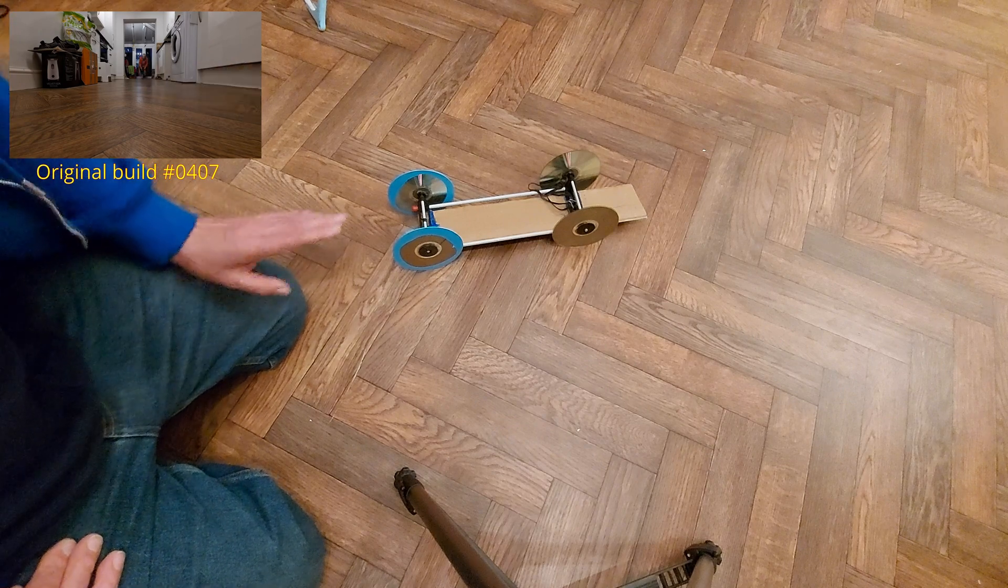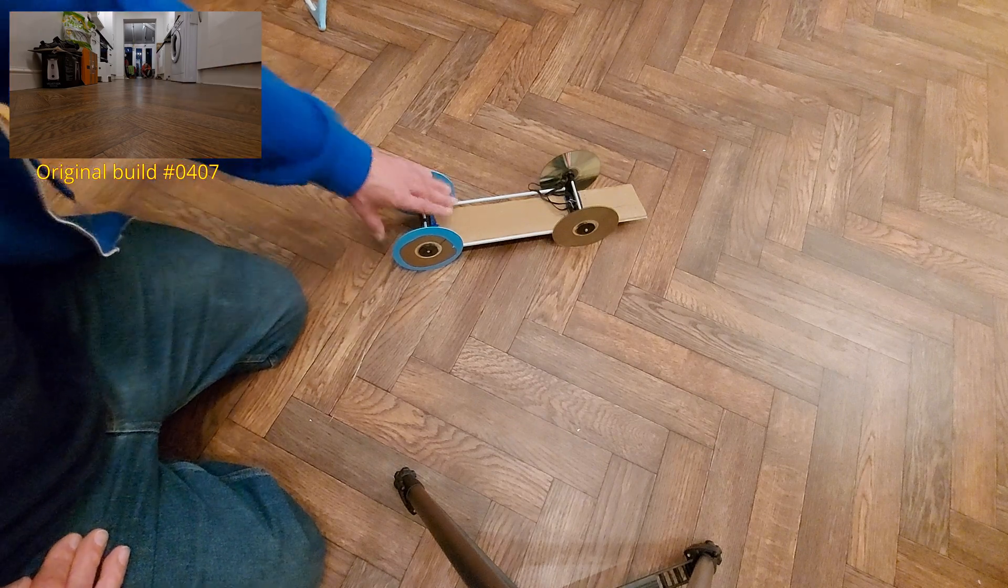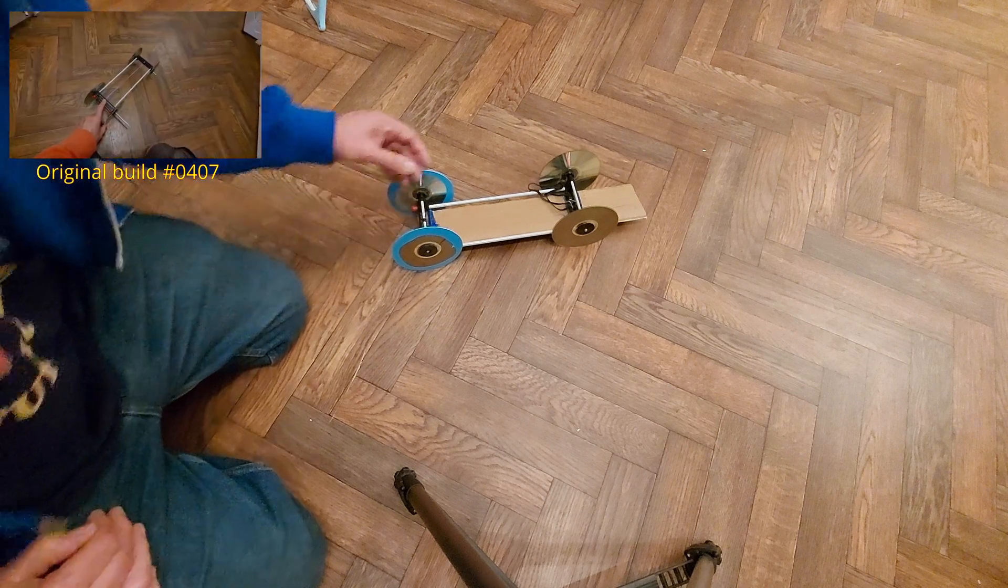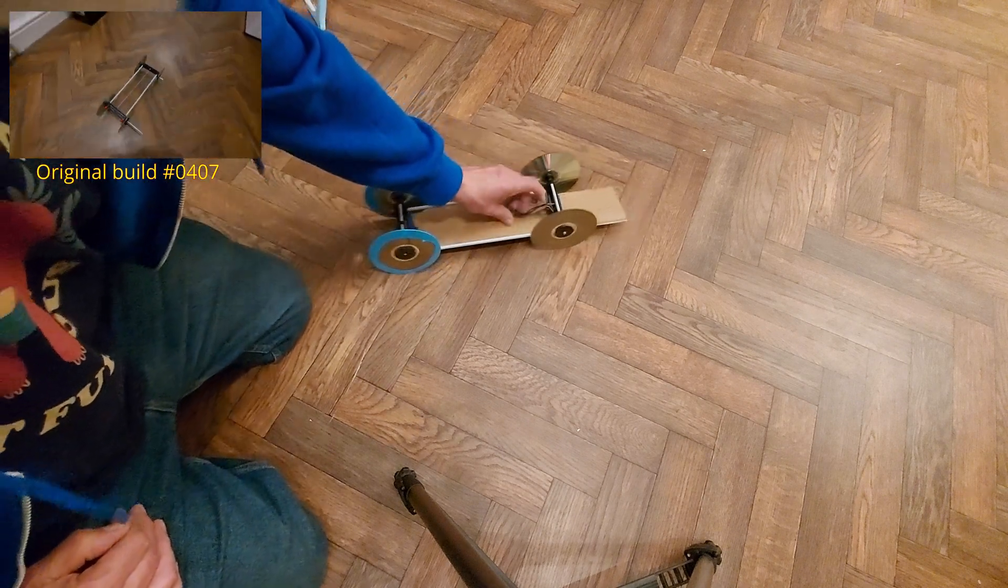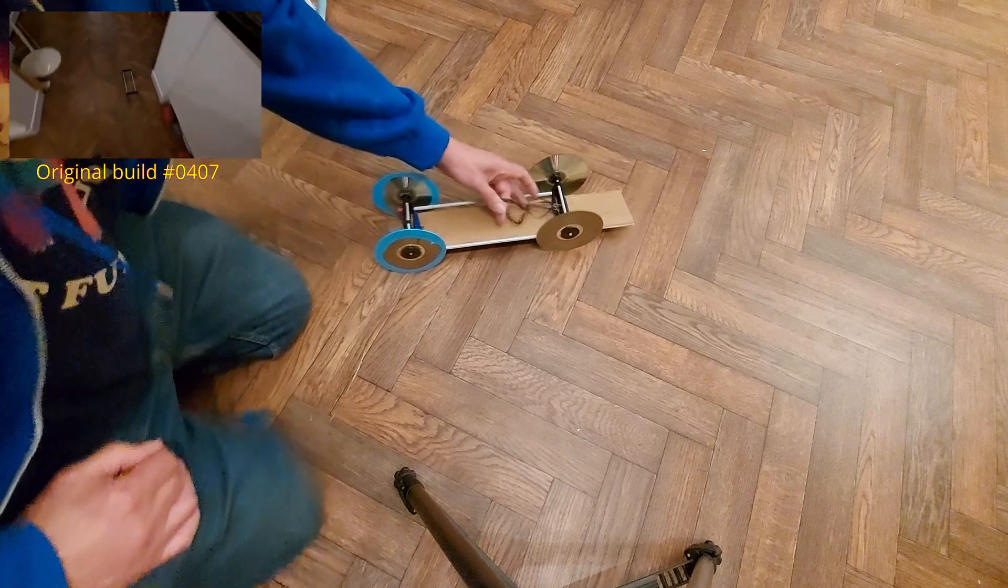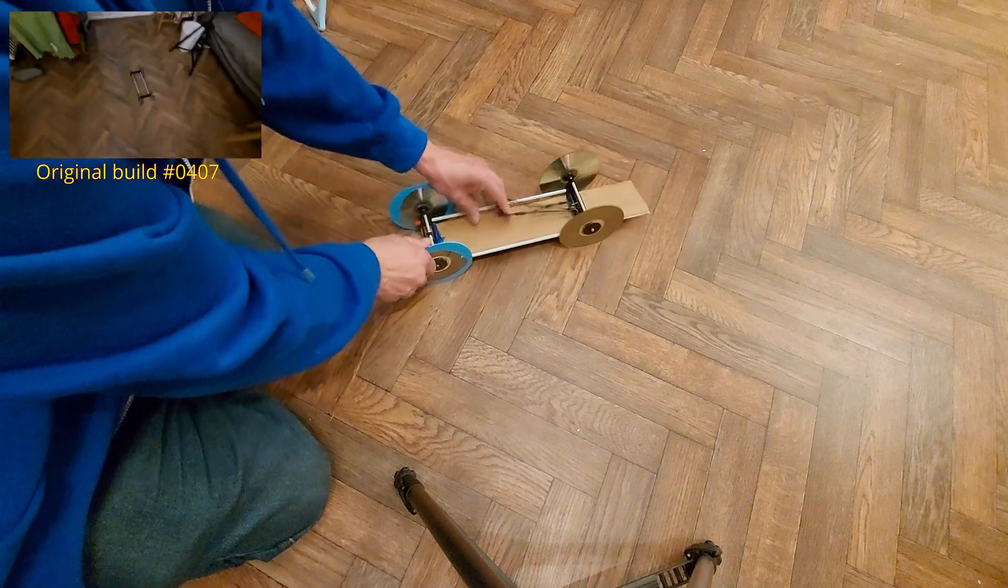And then the other thing you can do is add weight. That'll help the back wheels grip as well. But obviously, the more weight you add, you're going to slow the car down because you're increasing the mass.